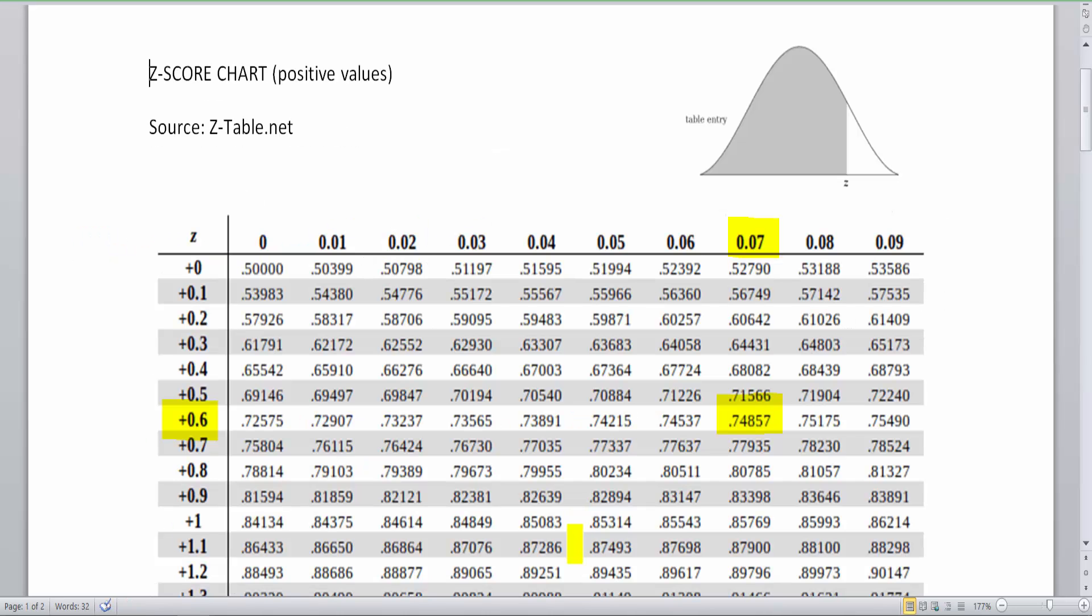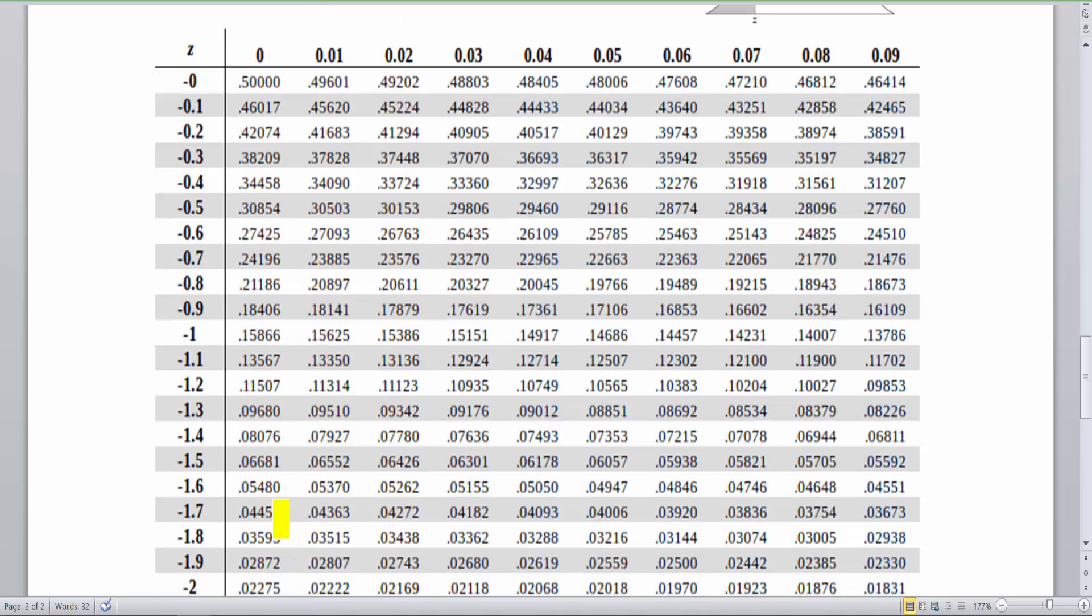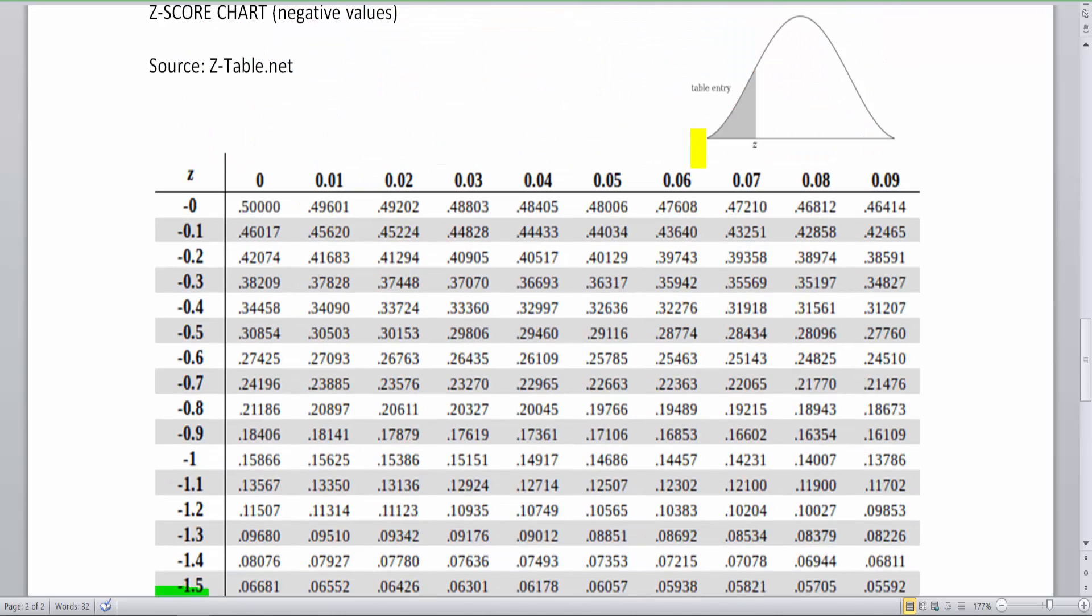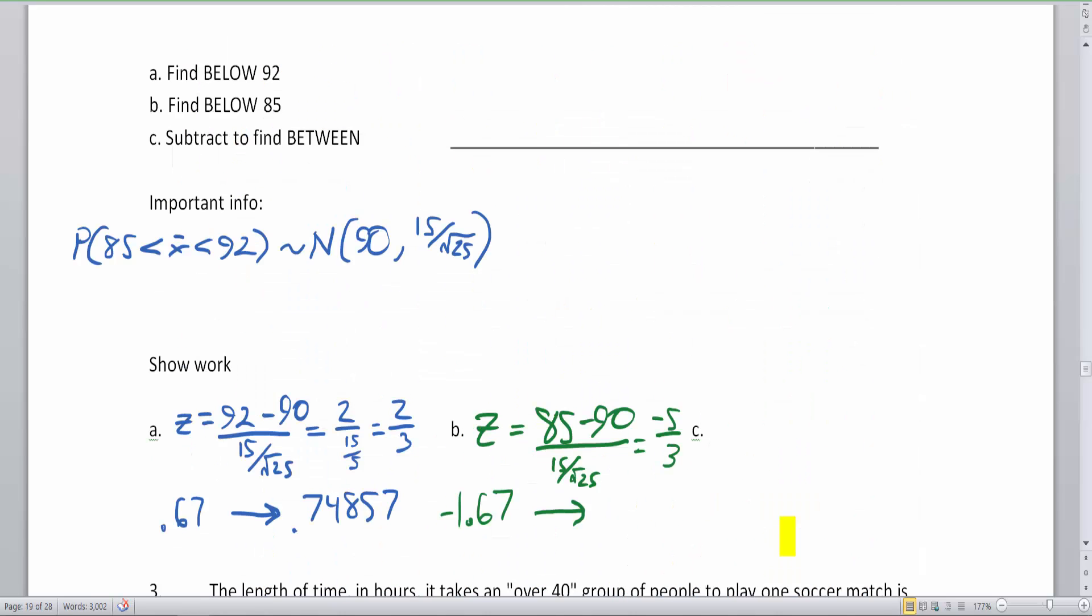Going back to my z-chart here, I'm on the wrong page because this has the positive values. So I'm going to get to the negative values here. And negative 1.67. I look at that value at 0.04746. 0.04746. And now back to this worksheet.